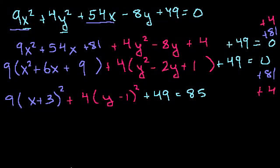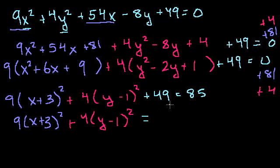So now we have 9 times x plus 3 squared plus 4 times y minus 1 squared. And let's subtract 49 from both sides. That is equal to, let's see, if I subtract 50 from 85, I get 35. So if I subtract 49, I get 36.